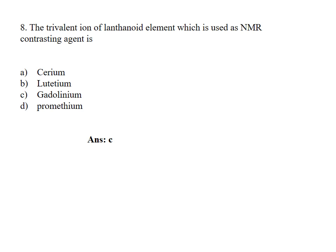The trivalent ion of lanthanoid element which is used as NMR contrasting agent is: Option A, Cerium; B, Lutetium; C, Gadolinium; D, Promethium. Answer Option C, Gadolinium.